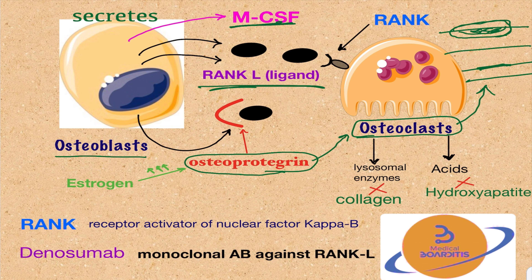The osteoblasts then start laying down new bone in that area. As osteoblasts continue secreting matrix and osteoid, they become trapped within the osteoid and transform into what are called osteocytes. This process repeats itself continuously with injuries and fractures.